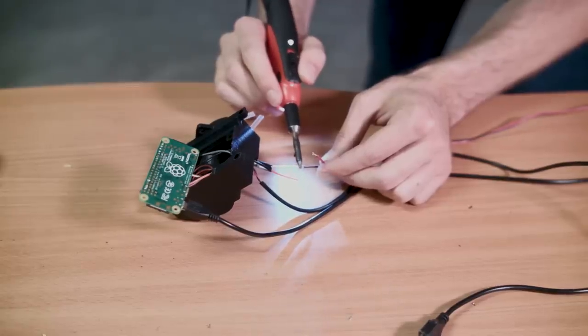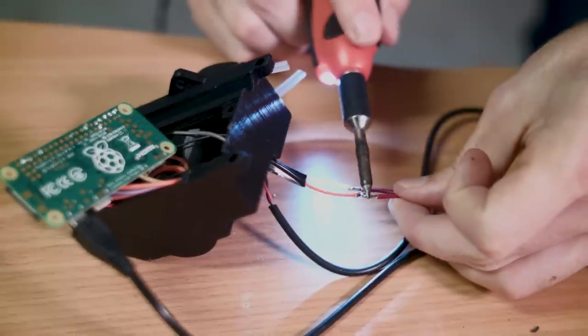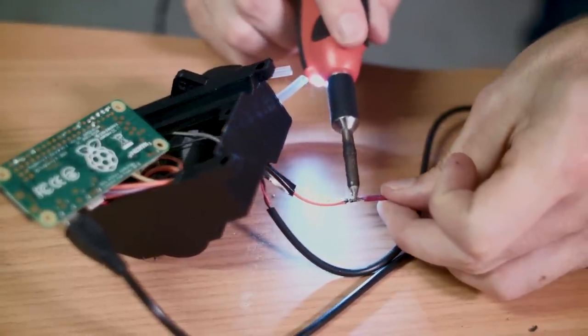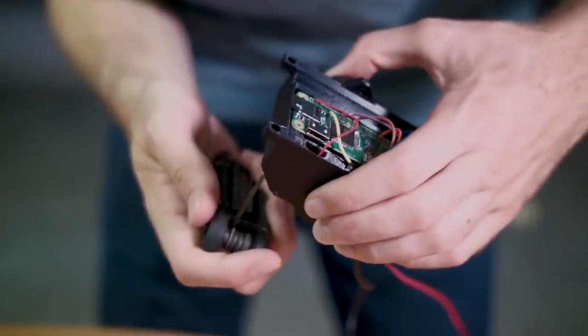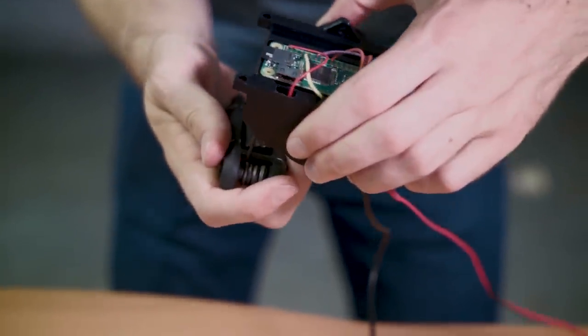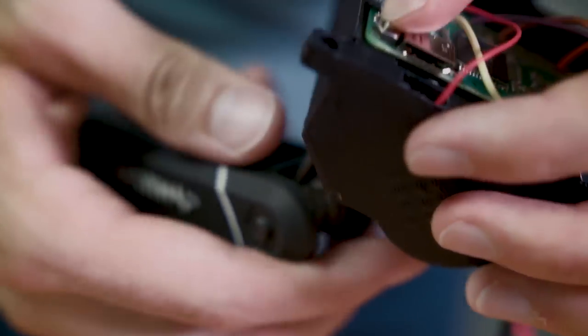Finally we wired two extension wires for our 12 volt switching power supply. Next we fed some 3 millimeter screws through the openings on the back of the case and attached the Raspberry Pi.